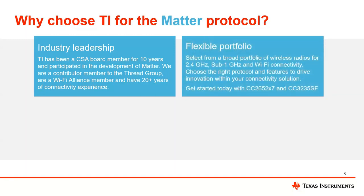TI also offers a flexible portfolio of hardware, supporting most connectivity standards including sub-1 gigahertz, 2.4 gigahertz, Bluetooth Low Energy, Thread, Zigbee, and Wi-Fi. We have a wide set of devices to support a wide set of protocols. If you want to run a Thread MATTER device with BLE commissioning, we have an option for that. If you want to run a Wi-Fi device with MATTER and Wi-Fi commissioning, we also have an option. We have a couple of devices you can get started with today for MATTER.